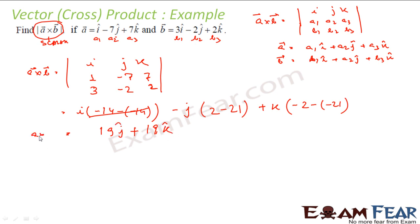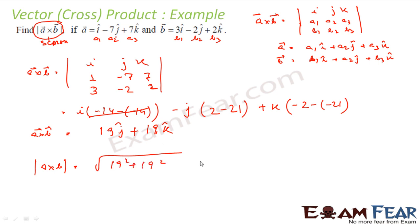But I am asked to find the magnitude of A cross B. So the magnitude is the square root of 19² plus 19², which equals 19√2.